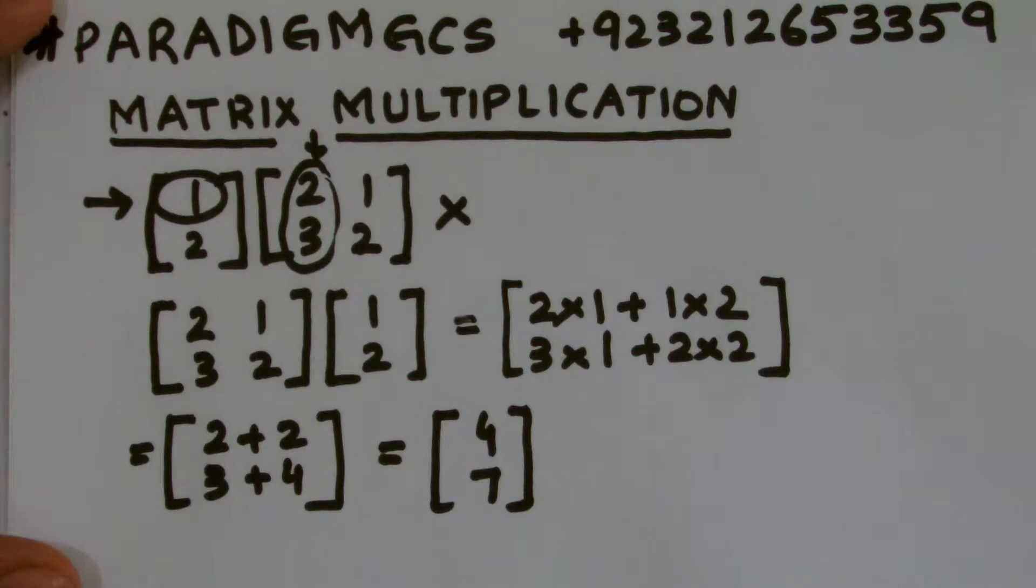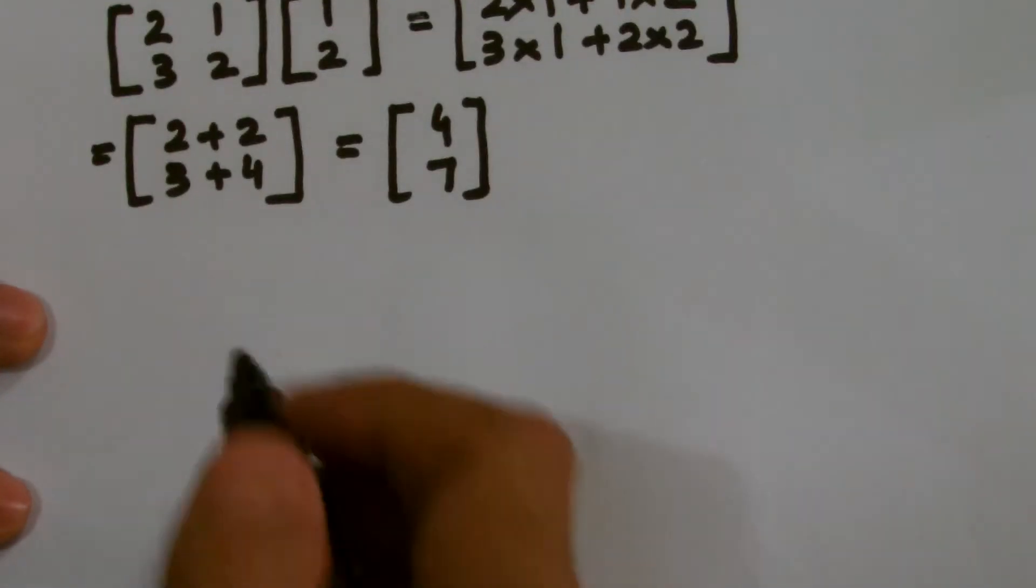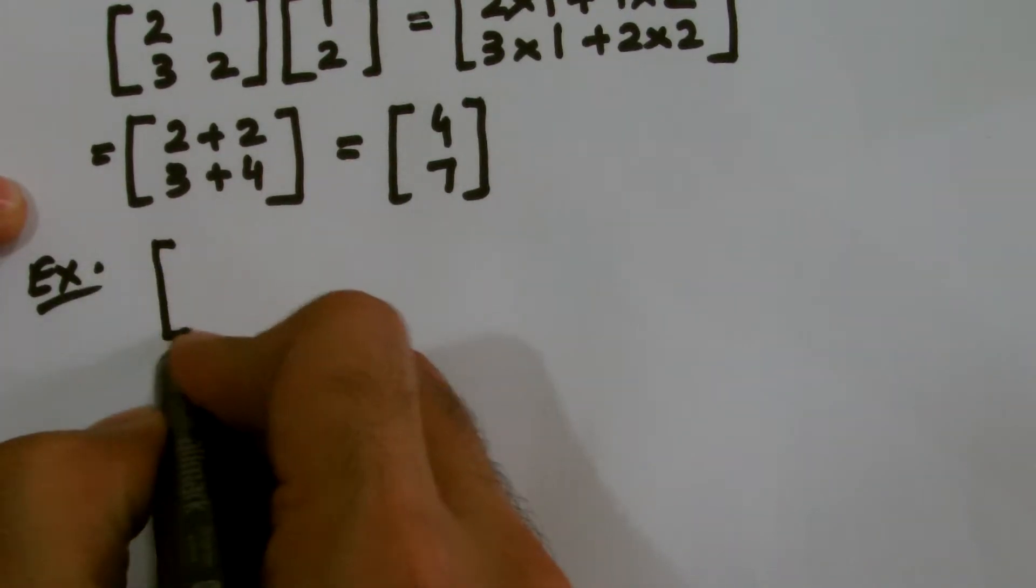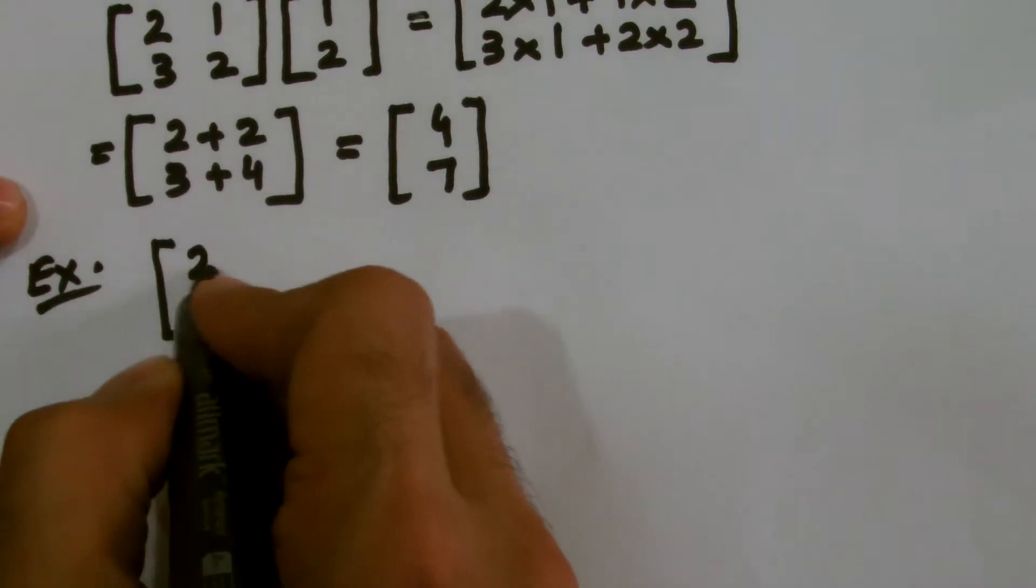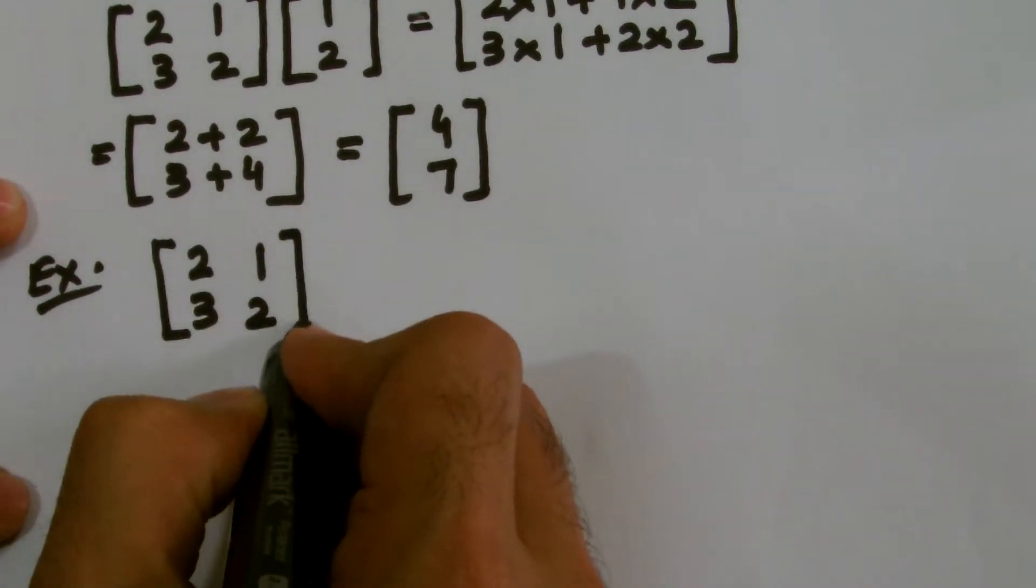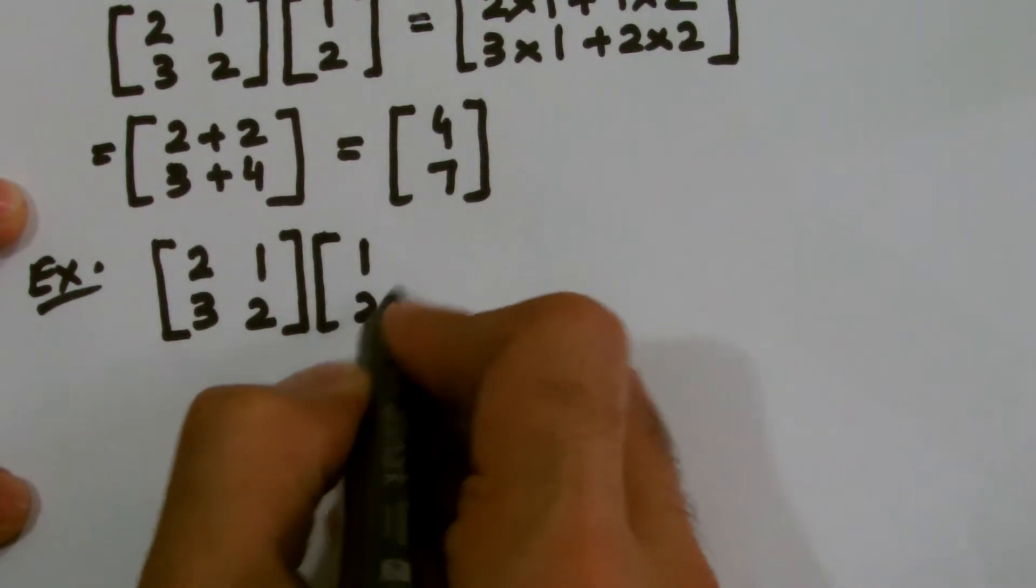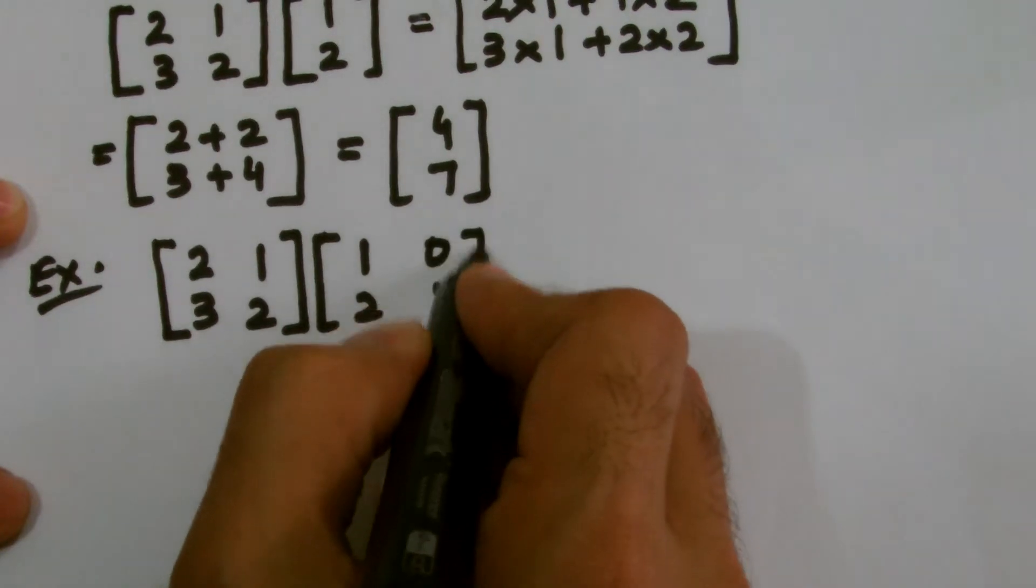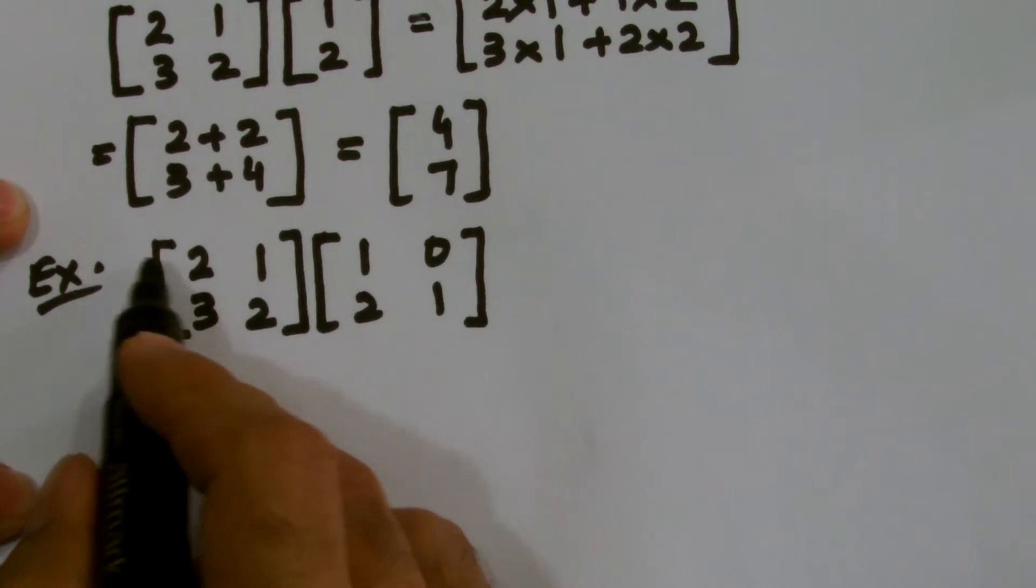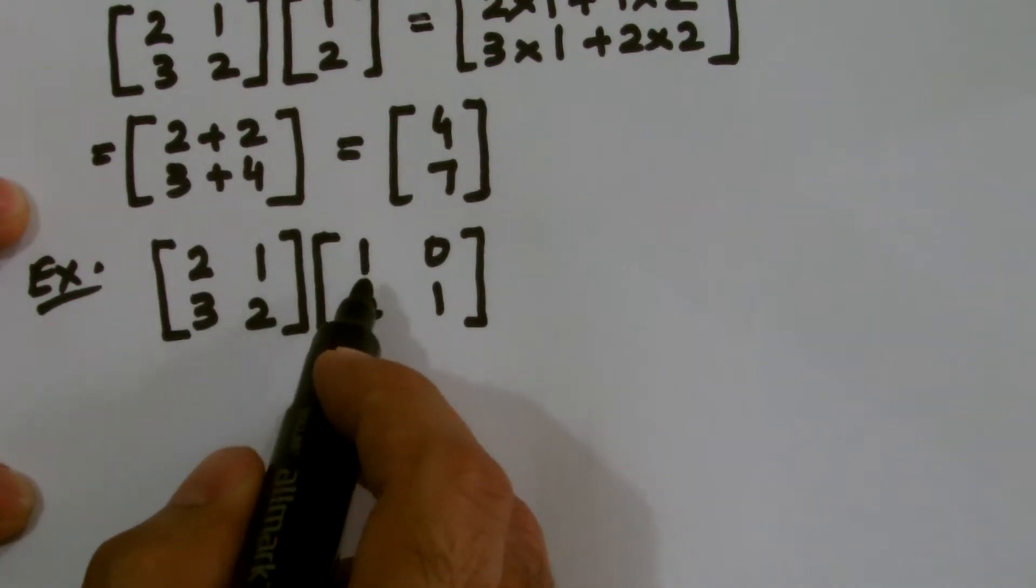Similarly, if I want to multiply two square matrices, I take another example. Let's multiply the same square matrix 2, 3, 1, 2 with another square matrix, let it be 1, 2, 0, 1. Then we can do it, this is again a possible case, because I am having the same two elements in the first row, I am having two elements in the column, so this is possible.